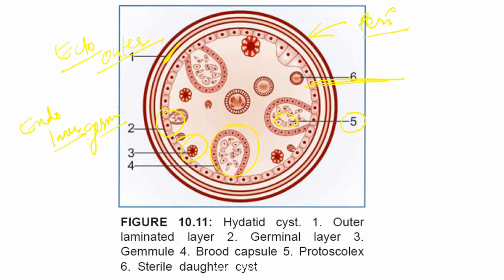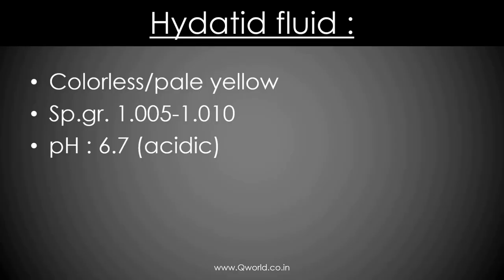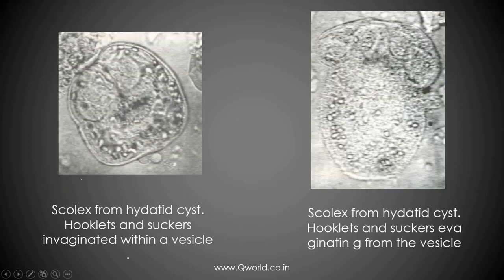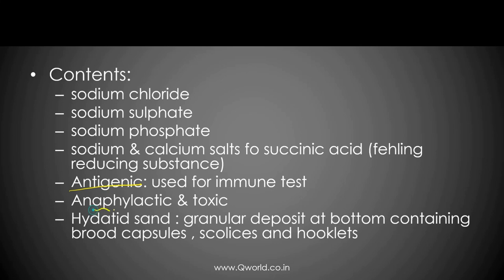The pericyst is the inflammatory reaction of the host. This hydatid cyst contains hydatid fluid which is colorless or pale yellow in color and very acidic in nature. It contains various sodium salts like sodium chloride, sulfate, phosphate, and sodium and calcium salts of succinic acid. It is antigenic so we can use it for serological tests, but it is anaphylactic and very toxic, so we must be very careful while handling the hydatid cyst. It also contains hydatid sand — a granular deposit at the bottom containing brood capsules, scolices, and hooklets.